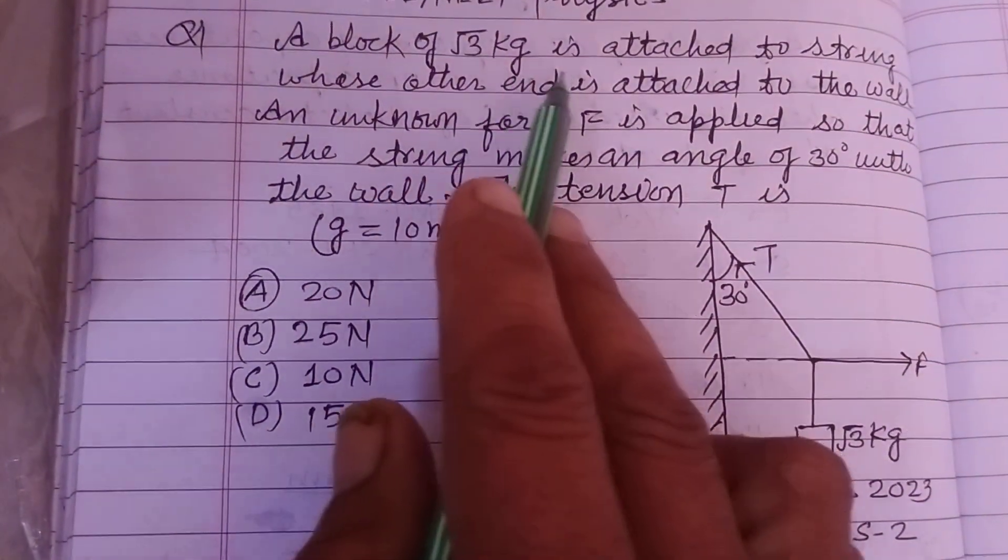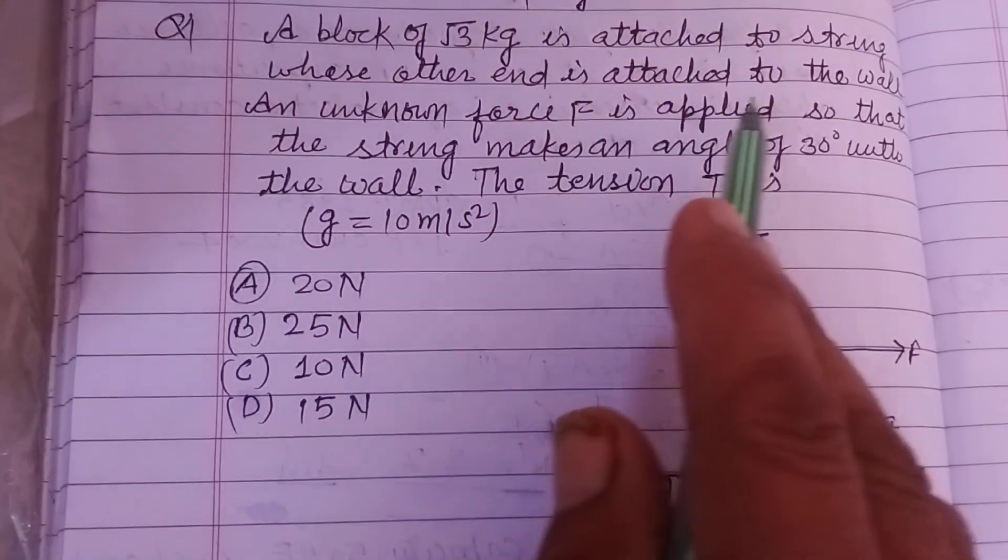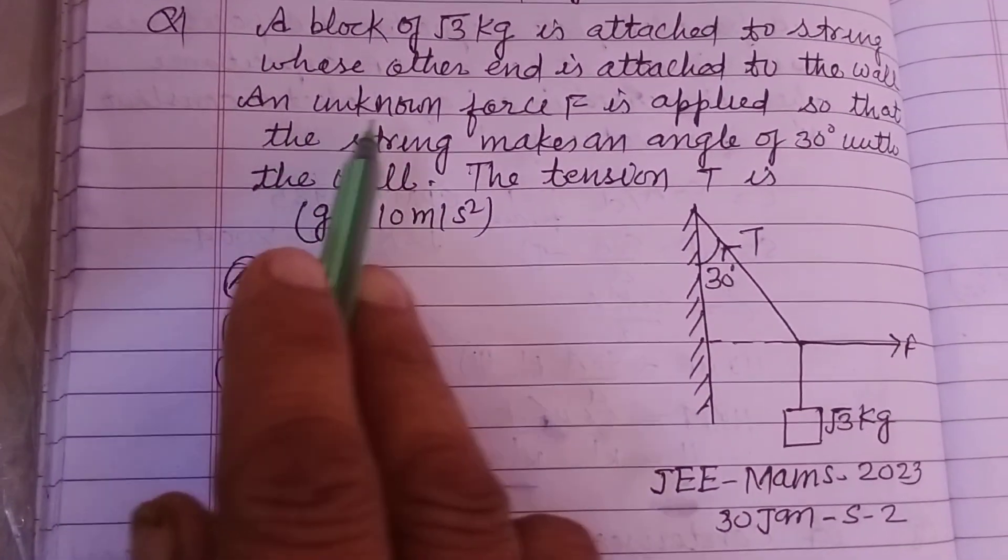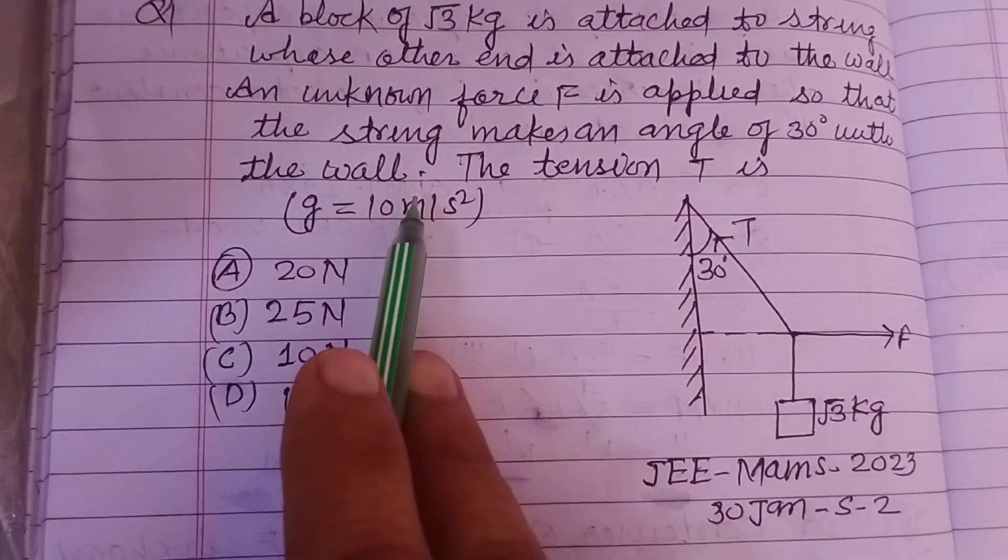A block of √3 kg is attached to a string whose other end is attached to a wall. An unknown force F is applied so that the string makes an angle of 30° with the wall.